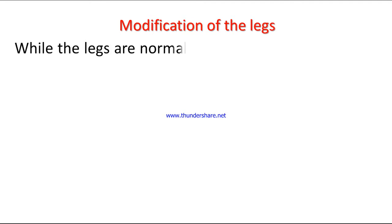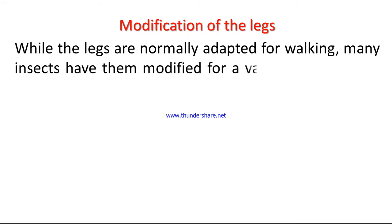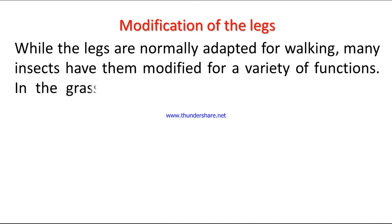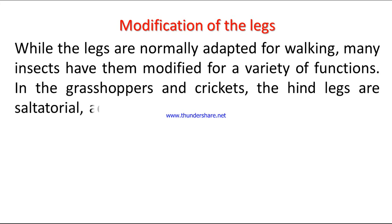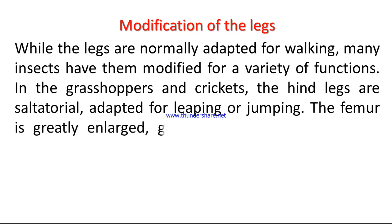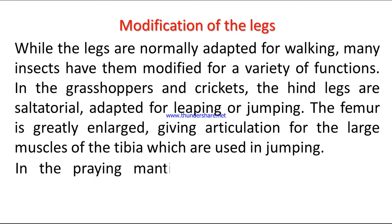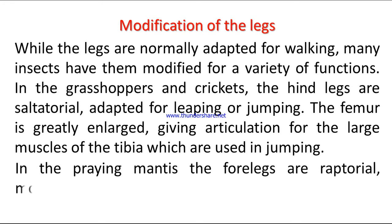Modifications of the legs: while the legs are normally adapted for walking, many insects have them modified for a variety of functions. In grasshoppers and crickets, the hind legs are saltatorial — adapted for leaping or jumping — with the femur greatly enlarged, giving articulation for the large muscles of the tibia used in jumping. In the praying mantis, the fore legs are raptorial, modified for grasping prey.